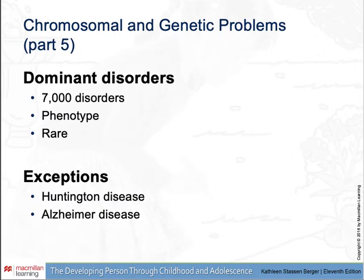Dominant disorders: there are 7,000 known single-gene disorders that are dominant. They are evident in the phenotype and are rare because people rarely live long enough to reproduce and pass the gene on. Exceptions include Huntington's disease — a fatal central nervous system disorder caused by a genetic miscode of more than 35 repetitions of a particular triplet — and a rare type of early-onset Alzheimer's disease, before age 60.